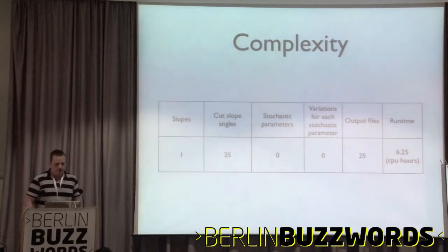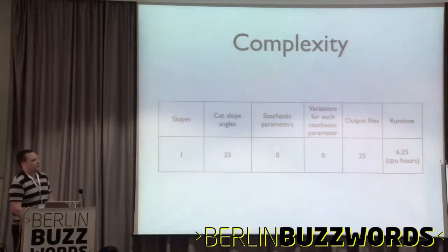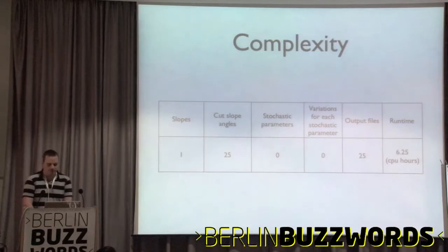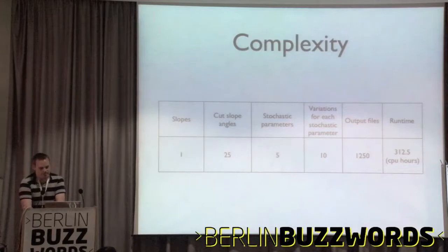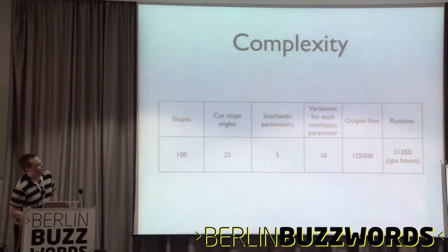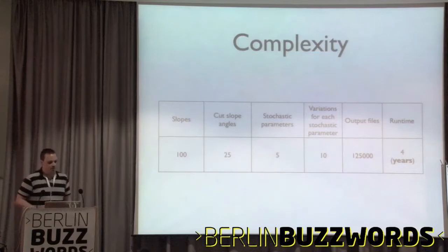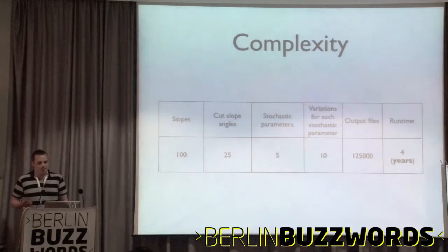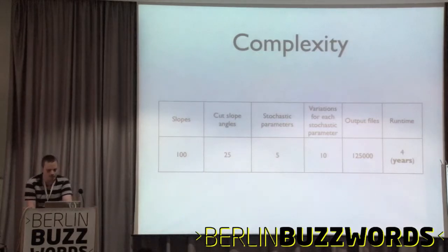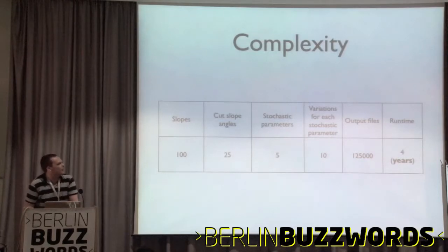...to 25 files and a six-hour run time when you start looking at different cut slope angles. It gets worse when you add stochastic parameters. When you start looking at multiple slopes, you're looking at about four years of CPU time and quite a lot of output files, which you're not going to be able to analyse by opening them in Excel, which is kind of how things are done at the minute.